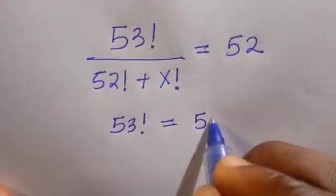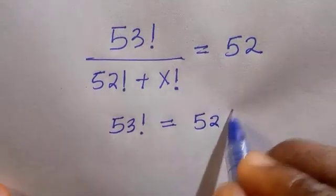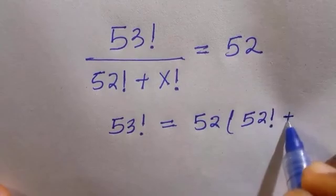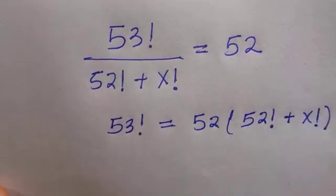By cross multiplying, we have this as 52 times the quantity 52 factorial plus x factorial.